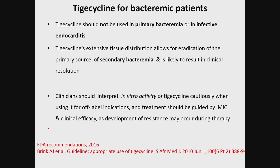Regarding tigecycline in bacteremia patients: tigecycline is not recommended for primary bacteremia or infective endocarditis, but it might be used in secondary bacteremia, because the primary source can be treated given its extensive tissue distribution, and secondary bacteremia can thereby be addressed. For example, if Streptococcus pneumoniae causes community-acquired pneumonia followed by bacteremia, treating the pneumonia with tigecycline may control the bacteremia. Clinicians should use tigecycline very cautiously for any indication beyond the primary three indications.